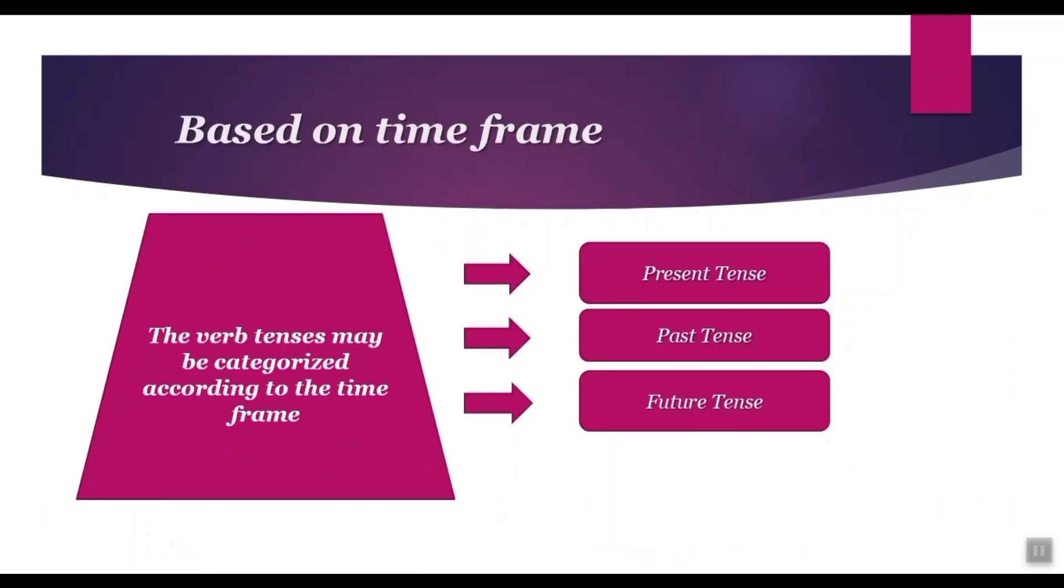Based on time, the verb tenses can be categorized into three main categories: present, past, and future tense.